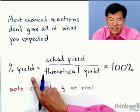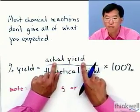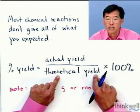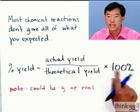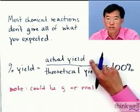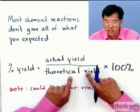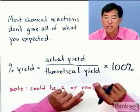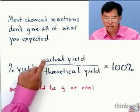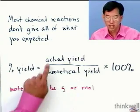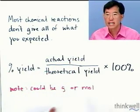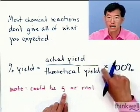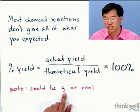Let's define a quantity called the percent yield. The percent yield is the actual yield — the experimentally determined yield you measure in the lab — divided by the theoretical yield, which is calculated based on what you put in, multiplied by 100%. Because it's the same compound in the numerator and denominator, you can use actual and theoretical yield both in grams or both in moles and get exactly the same answer, since the molar mass cancels.